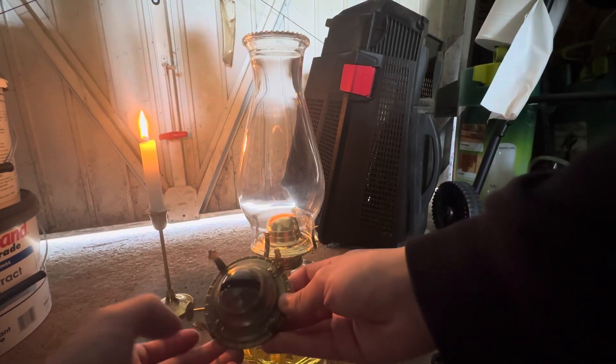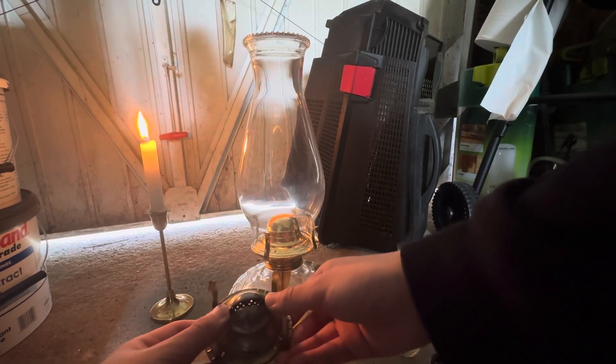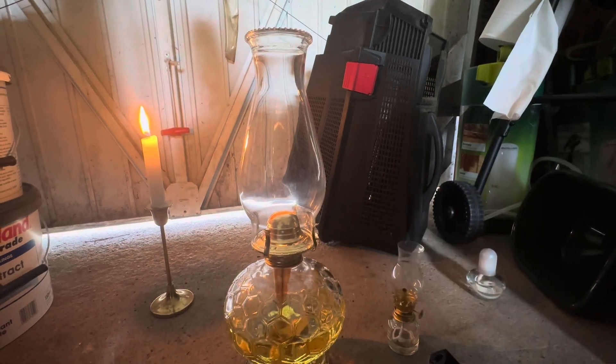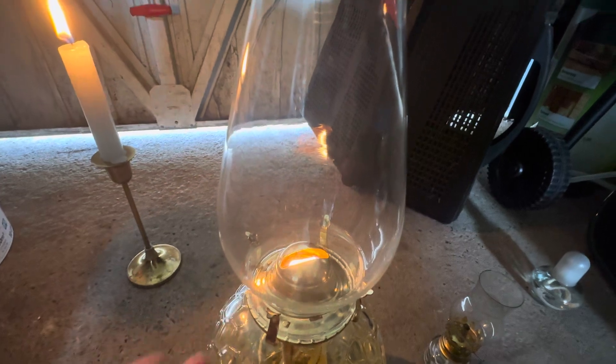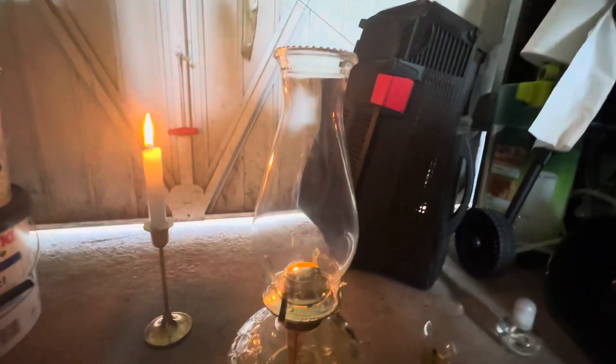The old burner, if we look here, you can see the slot is a rectangular slot, instead of the newer burner which has an oval slot. I've already ignited the wick for easier demonstration.